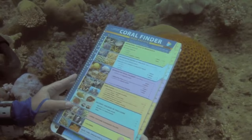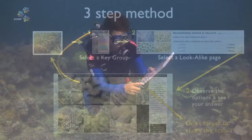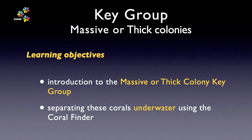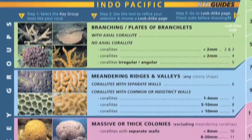Welcome to the sixth training movie in the Coral Finder Toolkit training movie series. In the previous movie, we introduced the meandering key group, learned tips and tricks about working with meandering corals, and developed a recipe for the coral identification process when using the coral finder, both underwater and topside. Now we are going to quickly explore the massive and thick colony key group before moving on to more tips and tricks at the heart of learning to separate the many coral genera.